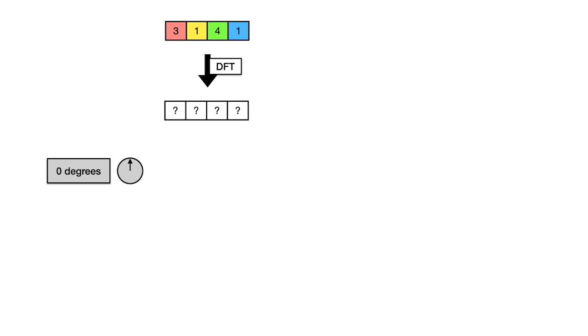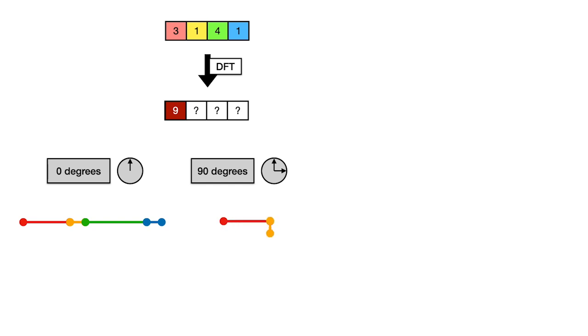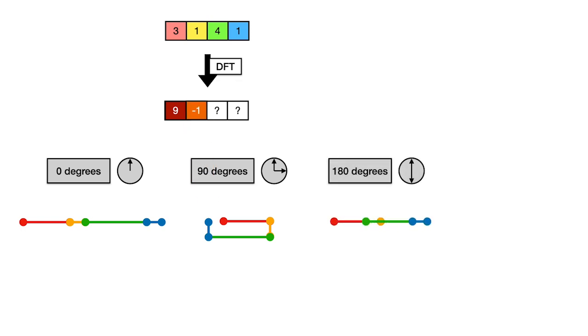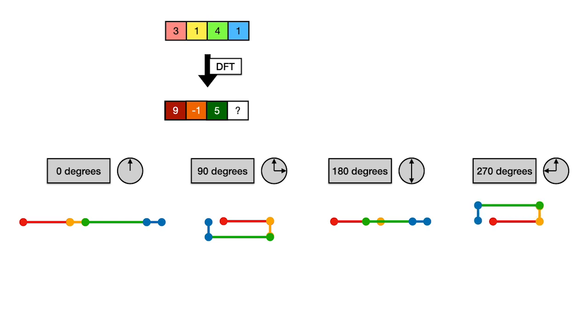Let's study the DFT of the first block, 3141. The first element is easy because we rotate zero degrees — we're concatenating four rods of length 3, 1, 4, 1, and the total length is 9, which is always the sum of the elements. Next we rotate 90 degrees and end up one unit to the left, so that's minus 1. Next we rotate 180 degrees and end up five units to the right, so that's 5. Finally, for the 270-degree rotation, it's similar to the 90-degree one but flipped, and we get minus 1 again. So the DFT of 3141 is 9, minus 1, 5, minus 1.